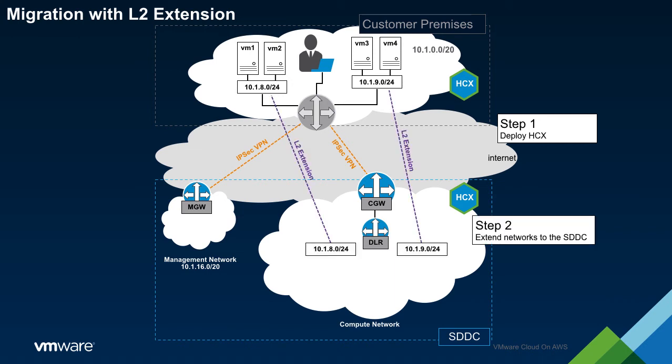It is important to note that HCX will configure and maintain its own dedicated IPSec tunnels for L2 extension. The HCX appliances are out of path of both the MGW and CGW, which means that HCX does not rely on them for connectivity.